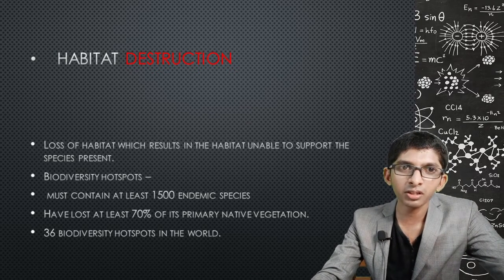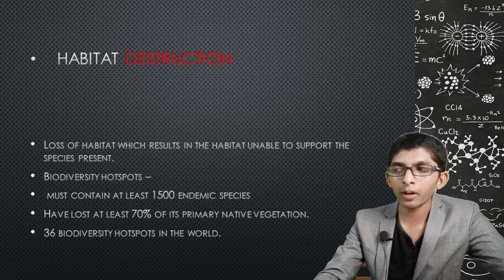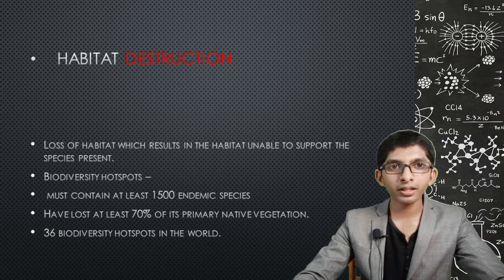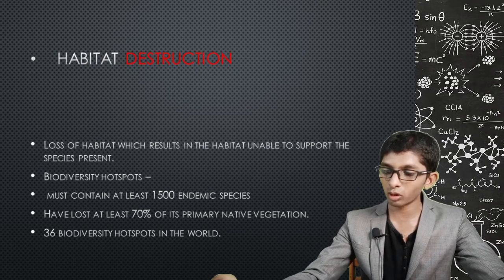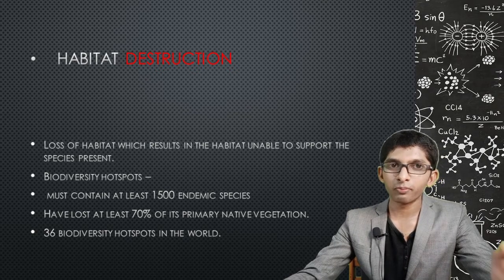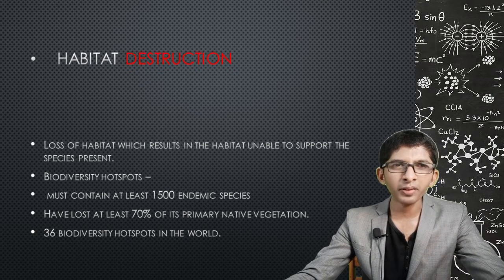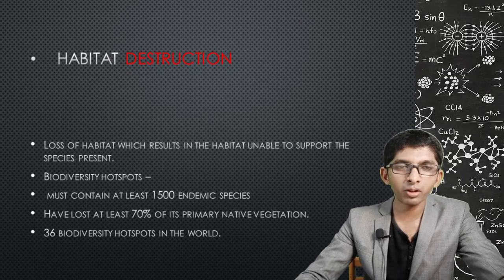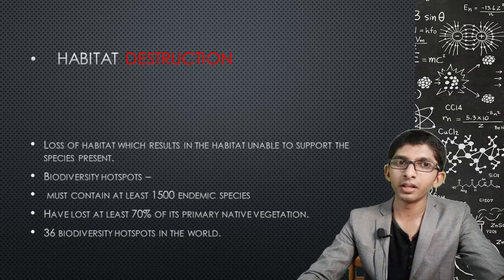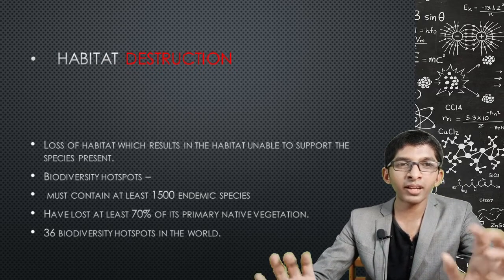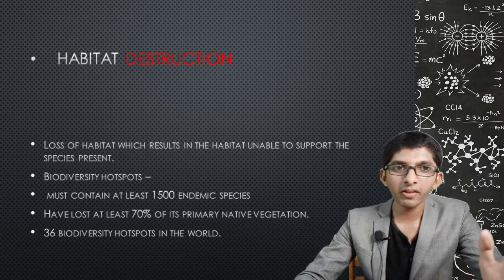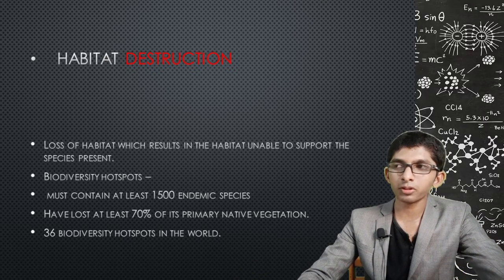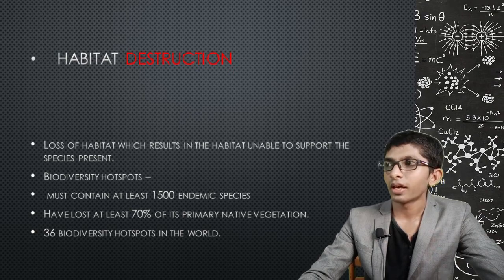Currently there are 36 biodiversity hotspots worldwide. India has its own biodiversity hotspots. A famous example is the Amazon Rainforest, which is a rich biodiversity hotspot with an enormous variety of plants and animals, but has lost more than 70% of its primary vegetation.